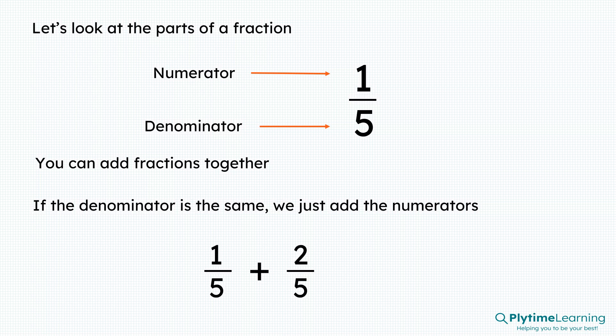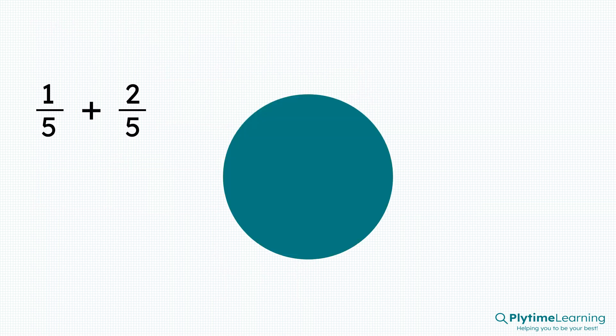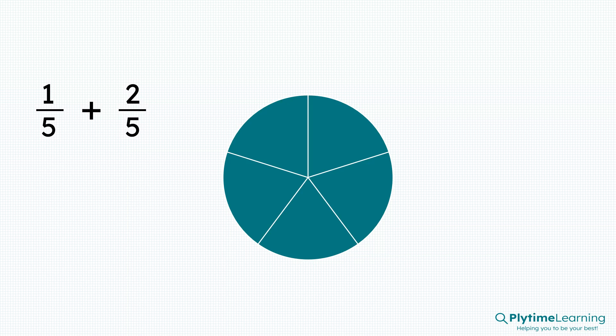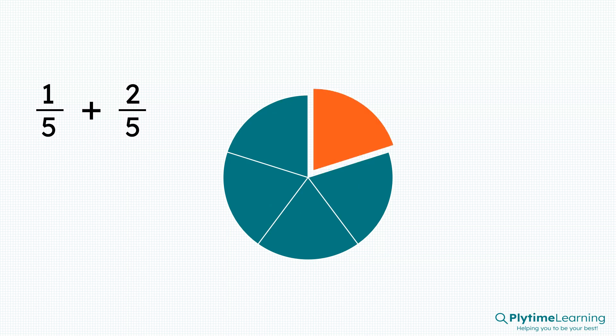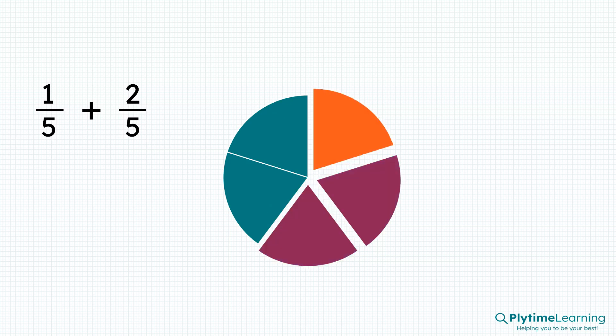One fifth plus two fifths. The denominators are the same. Let's look at it like this. If we have a whole, we can split it into five equal parts. Each part is one fifth. So in our sum, we have one fifth plus two fifths.